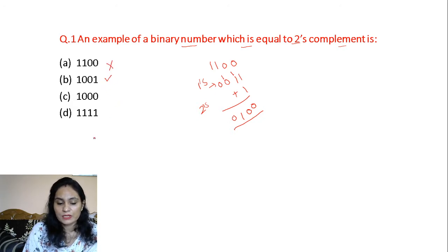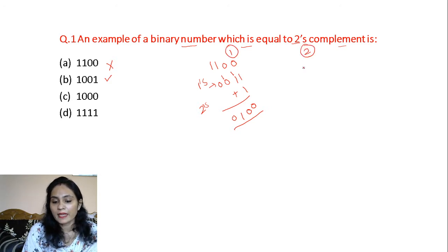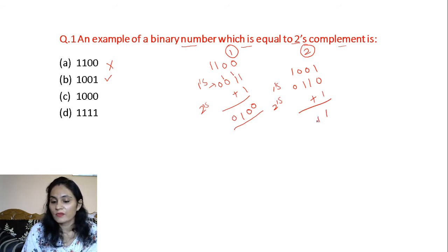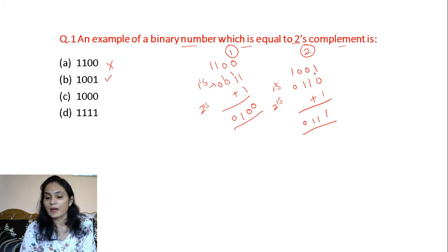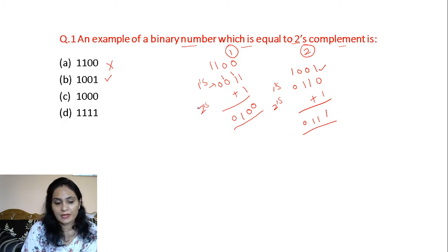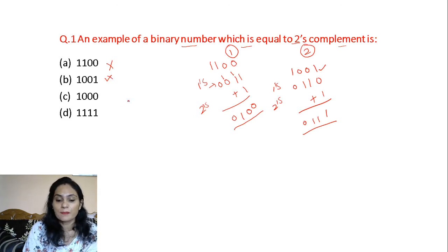Now let's talk about the second option, Option B, which is 1001. Option B is incorrect because when we apply 2's complement, the result does not match the original number.